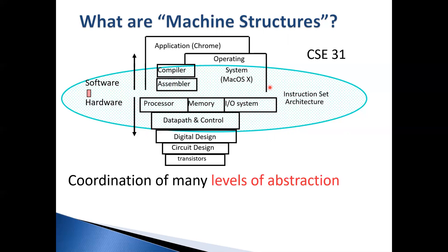On the hardware side, you have the processor (CPU), memory, and I/O. I/O is basically your keyboard, mouse, and monitor. Underneath this is detailed hardware implementation, which can get very complicated. Beyond the blue circle, you'd learn digital design, circuit design, and transistors in electrical engineering or computer engineering classes. Because of the size of our campus we can't offer that right now, but it is an interesting topic.